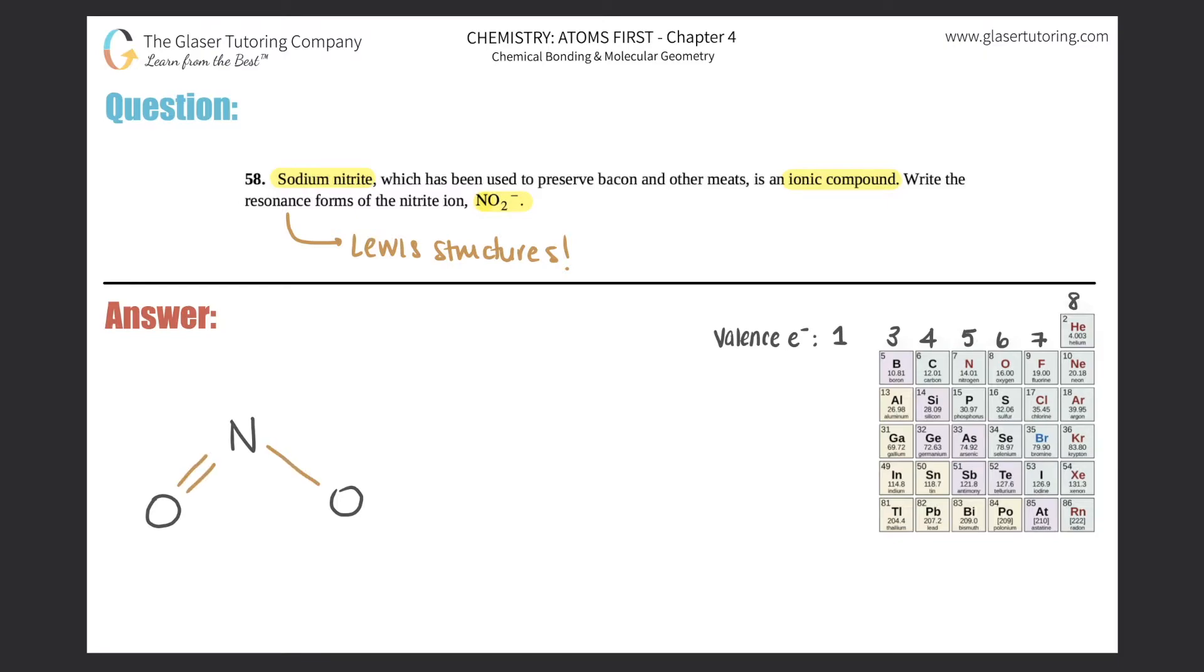And now you will fill in your lone pairs. This has two electrons, one pair. This has two electrons, and this one should have three pairs. And you can always just double check because the total number of valence electrons that are in the compound should equal what you drew here.